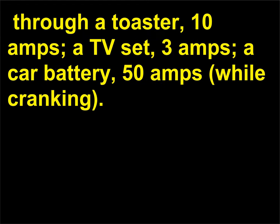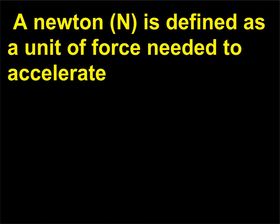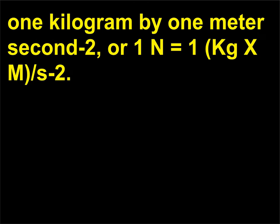Through a toaster, 10 amps; a TV set, 3 amps; a car battery, 50 amps while cranking. A newton (N) is defined as a unit of force needed to accelerate 1 kg by 1 meter per second squared, or 1 N = 1 kg·m/s².